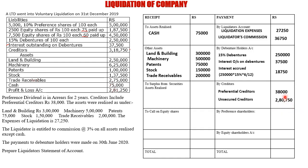The company still has sufficient funds. We have paid the liquidator's account, debenture holders, and creditors. Next are the preference shareholders. The preference share amount given in the question is 5,00,000, and we still have sufficient funds, so we pay out preference capital: 5,00,000.